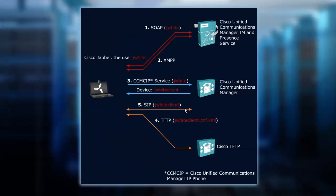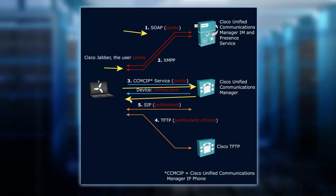Now contrast the desk phone mode with soft phone mode. If I don't have a physical phone that I'm going to be controlling, what happens then? The initial registration process is similar: we go through the SOAP HTTP request, we use XMPP, and we communicate with Communications Manager to get that information. At this point, we are registering and we're a SIP device.